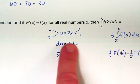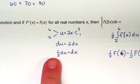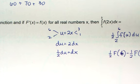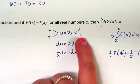Bringing the 2, because there's no 2 in front of this, would be 1 half du equal to dx. And then your new limits, when you put in 1 and 3, are going to be 2 and 6.